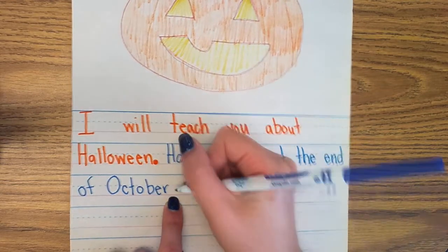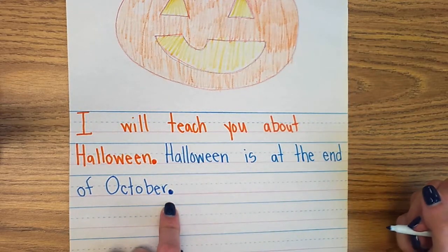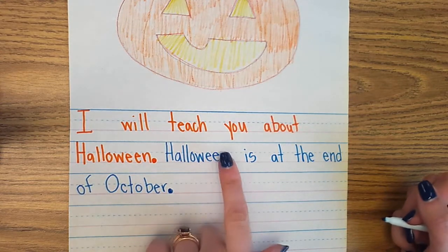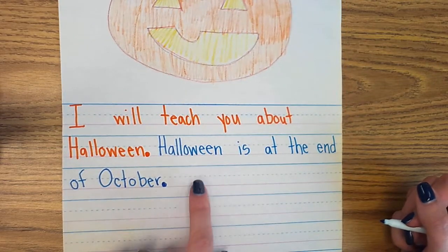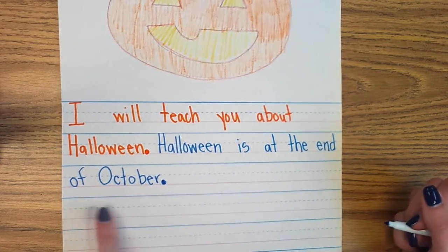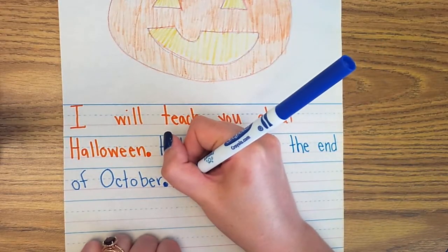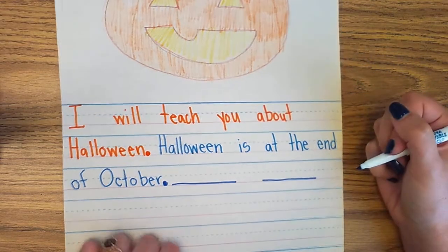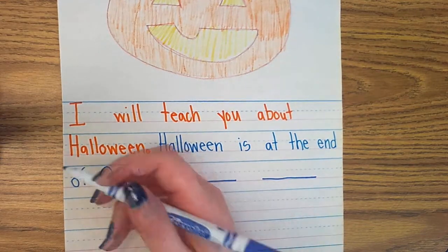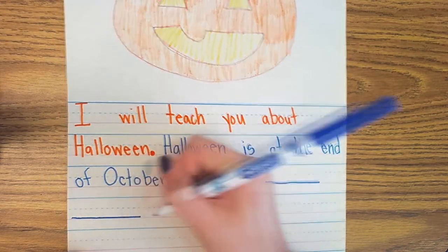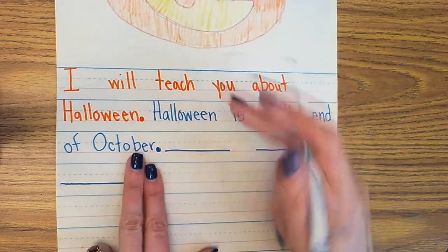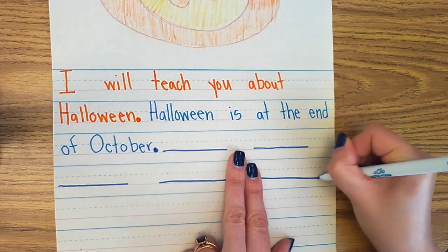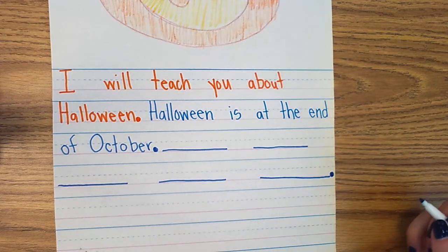Now let me write another teaching sentence. I want my reader to know that people often carve pumpkins called jack-o-lanterns. So: Halloween is at the end of October. People carve pumpkins called jack-o-lanterns. Let me write those lines so I don't forget what I'm trying to write. People — finger space — carve. Come down to my next line because I ran out of space over here. Pumpkins. If you need to put your two fingers down to make your space, you can. People carve pumpkins called — two finger space — jack-o-lanterns. Period at the end to tell my reader that's the end of my thought. Now I can go back and write it.